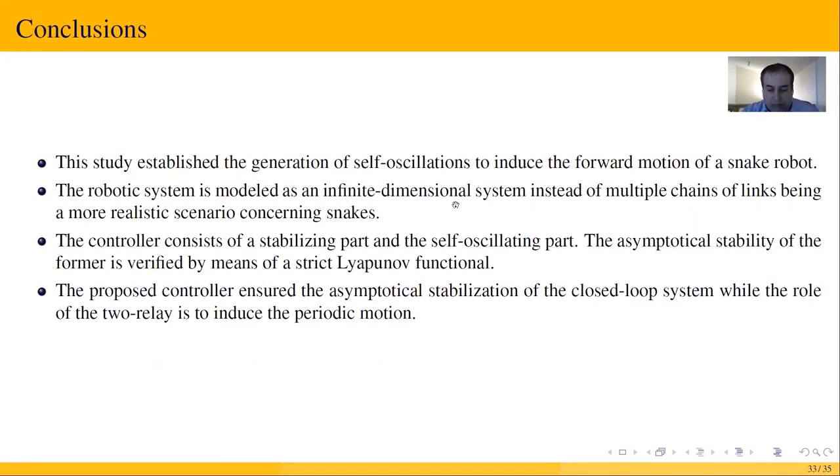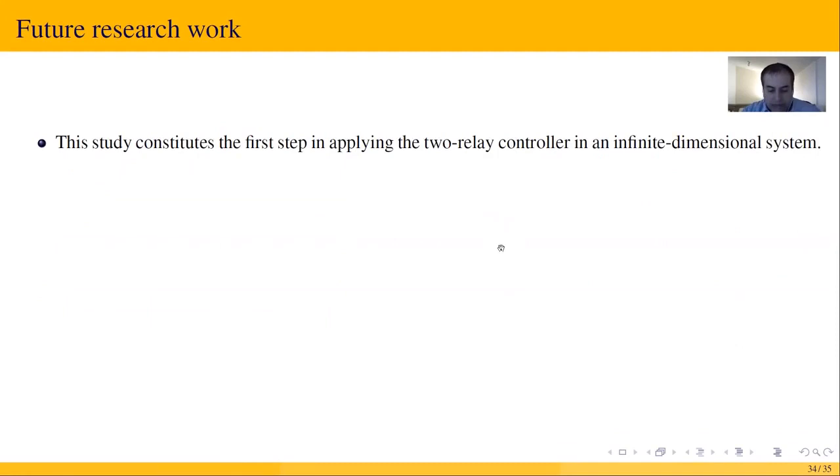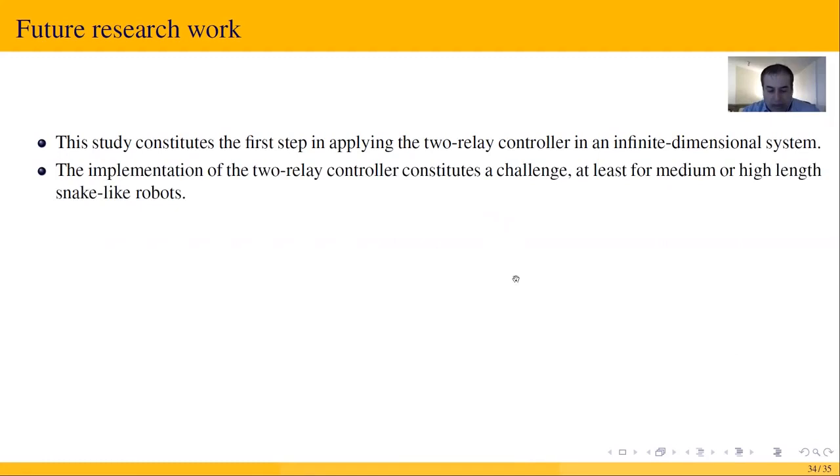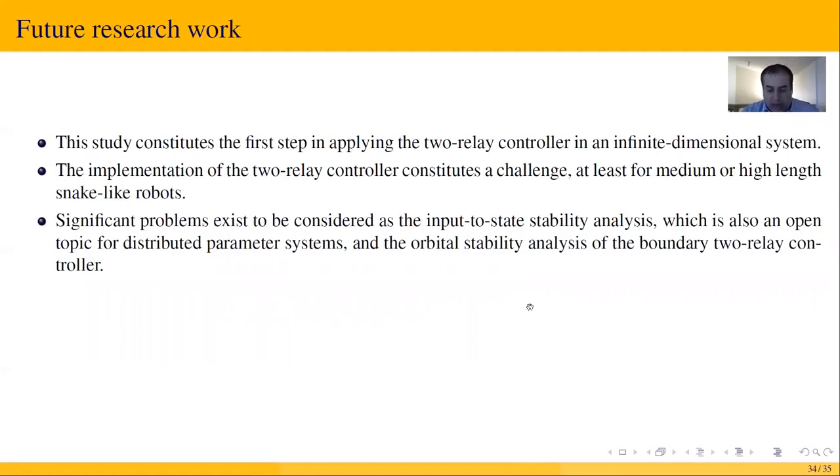This is to consider the first step in applying the two-relay controller in an infinite-dimensional system. The implementation of the two-relay controller constitutes a challenge, at least for medium or high-length snake-like robots. Significant problems exist to be considered such as input-to-state stability analysis, which is also an open topic for distributed parameter systems, and the orbital stability analysis of the boundary two-relay controller. That particular case is also reserved for future research.